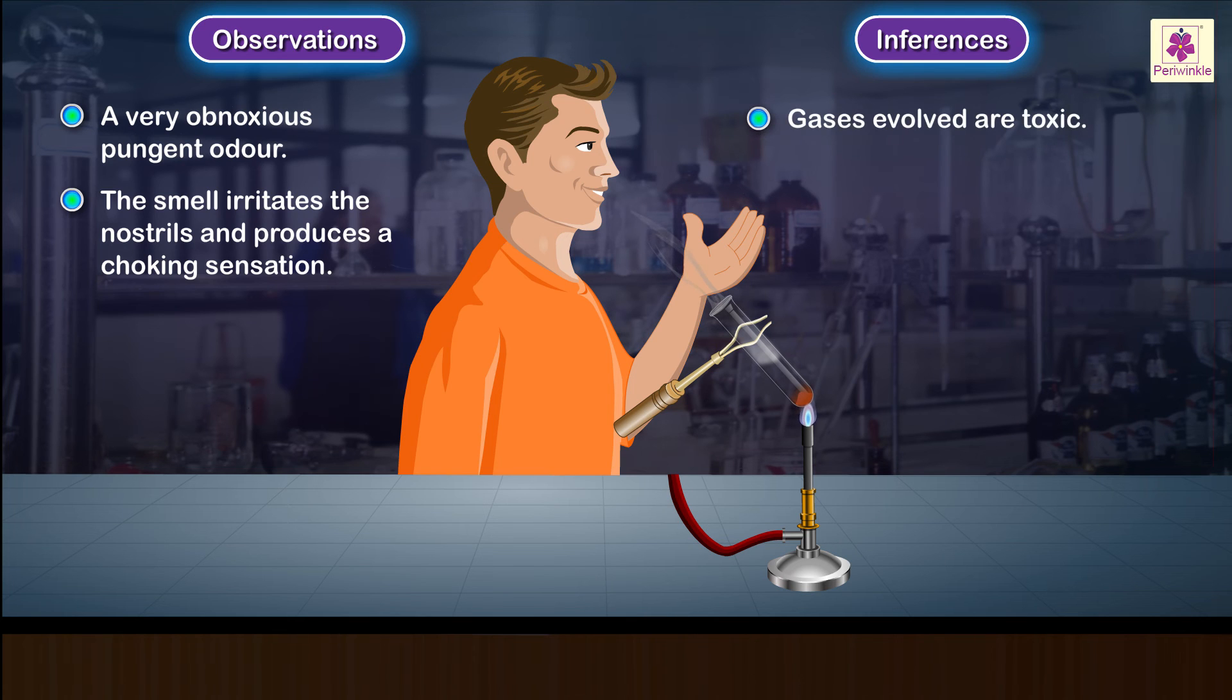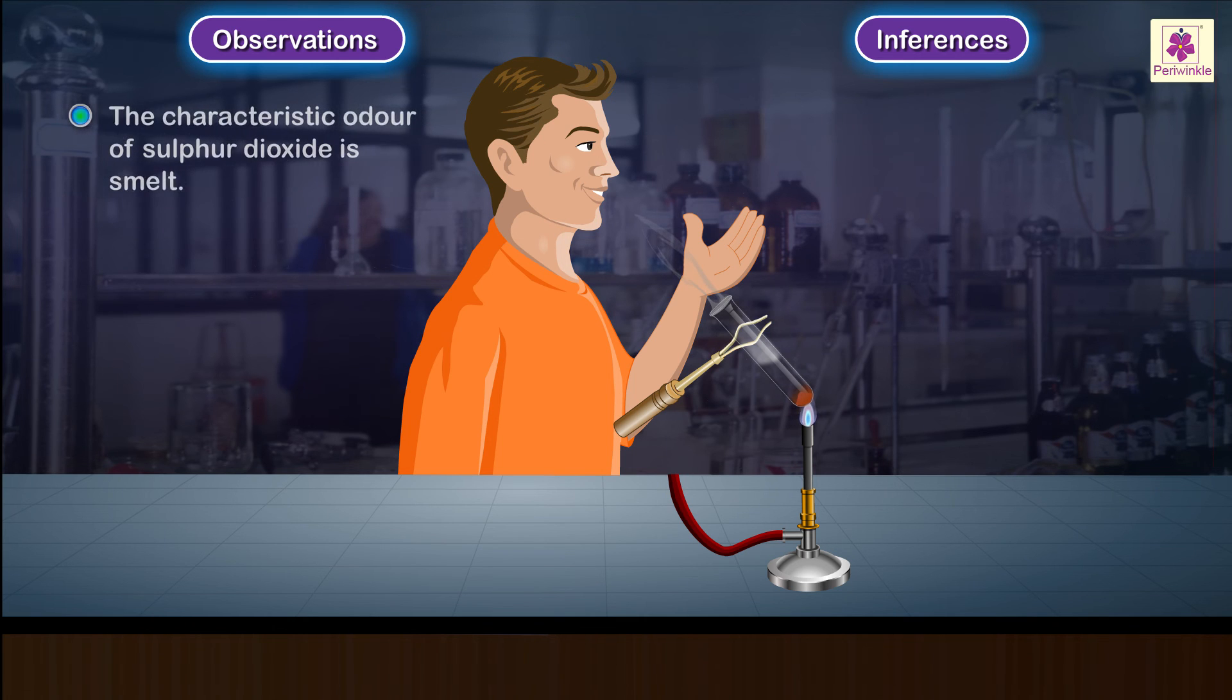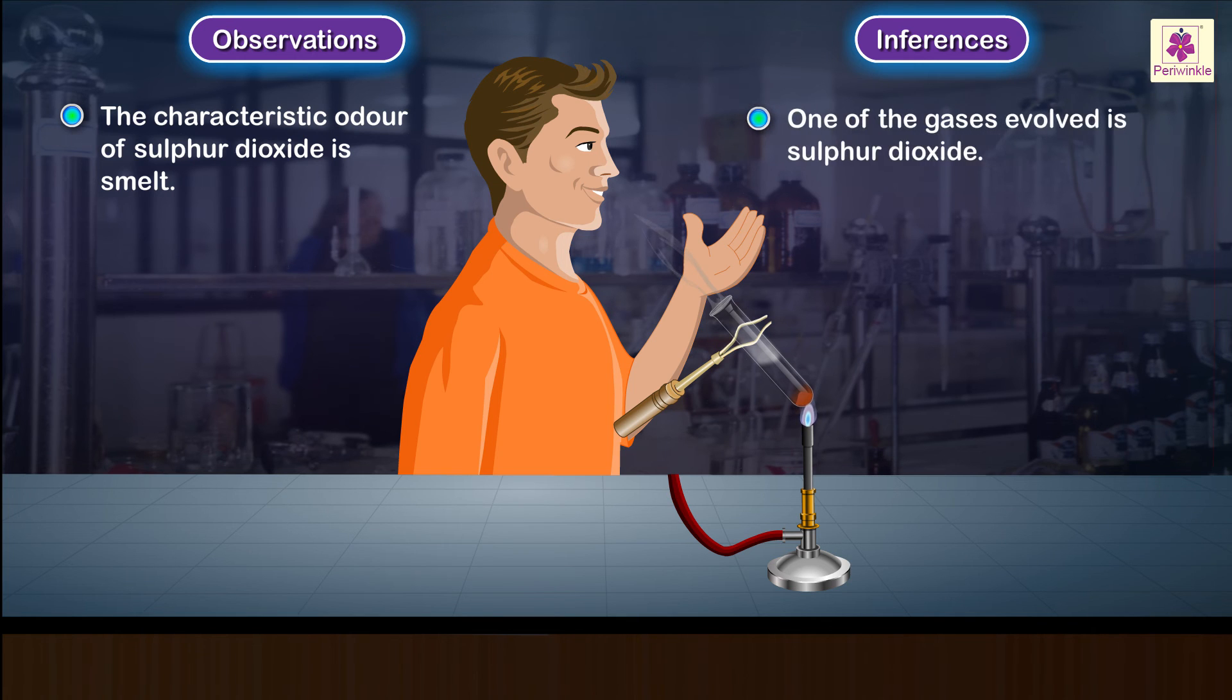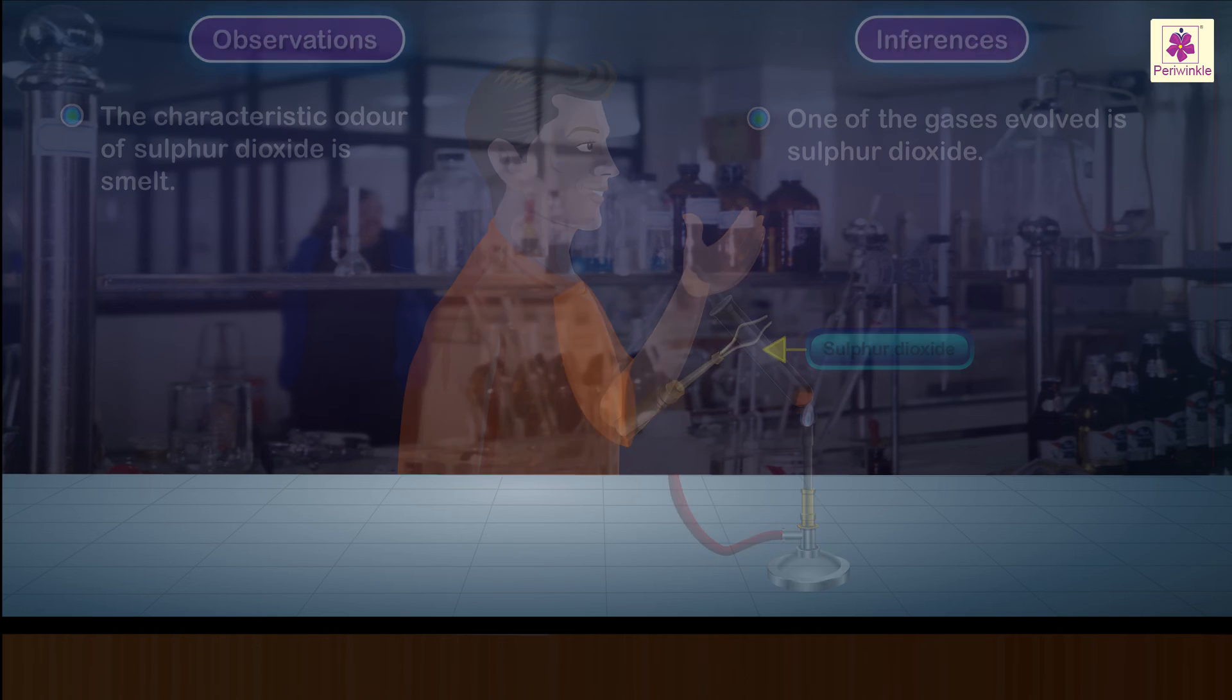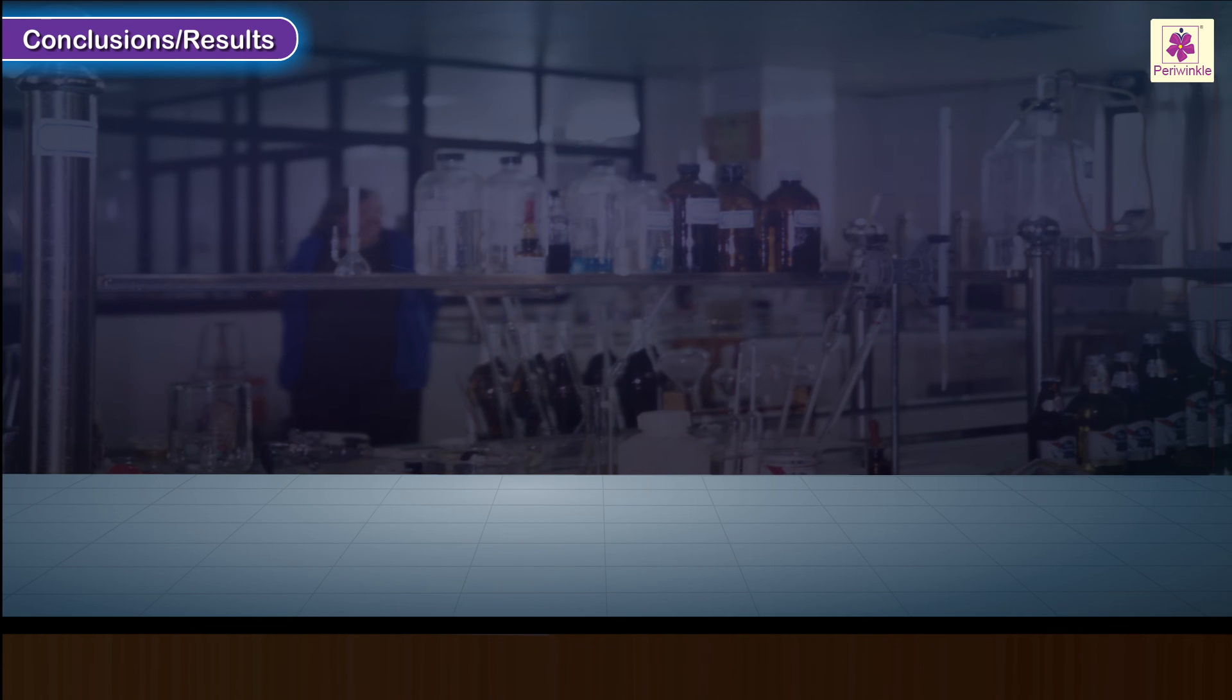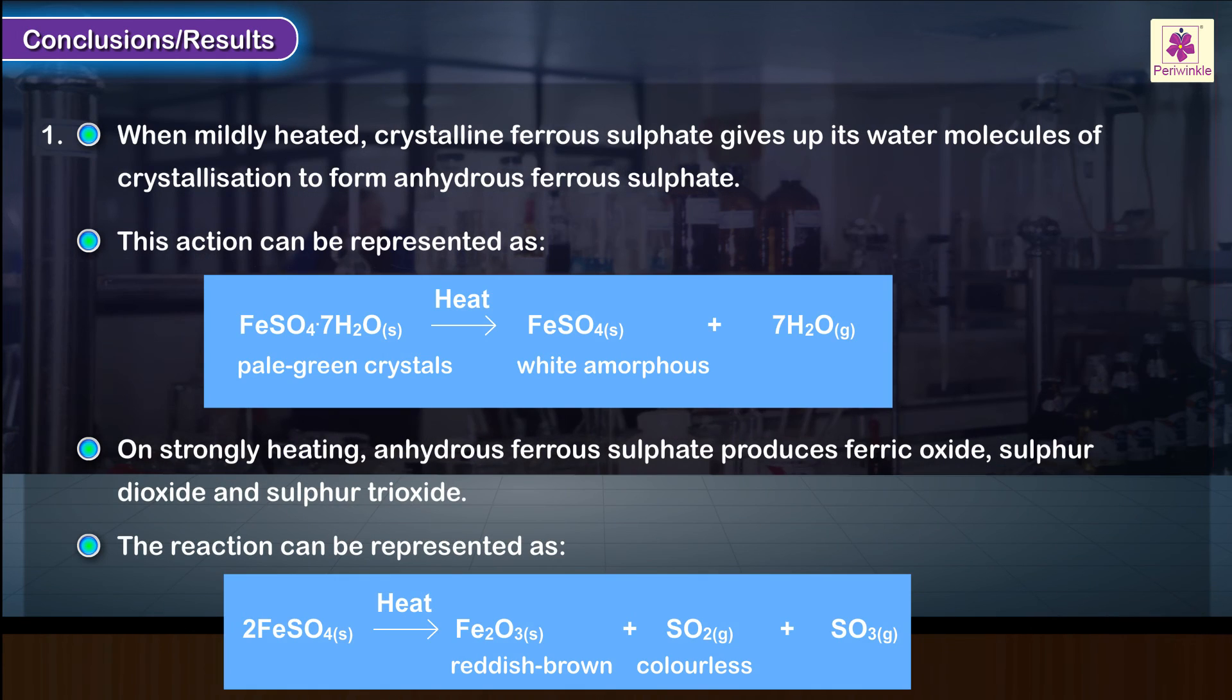Gases evolved are toxic. The characteristic odor of sulfur dioxide is smelled. One of the gases evolved is sulfur dioxide. Conclusions: All results.